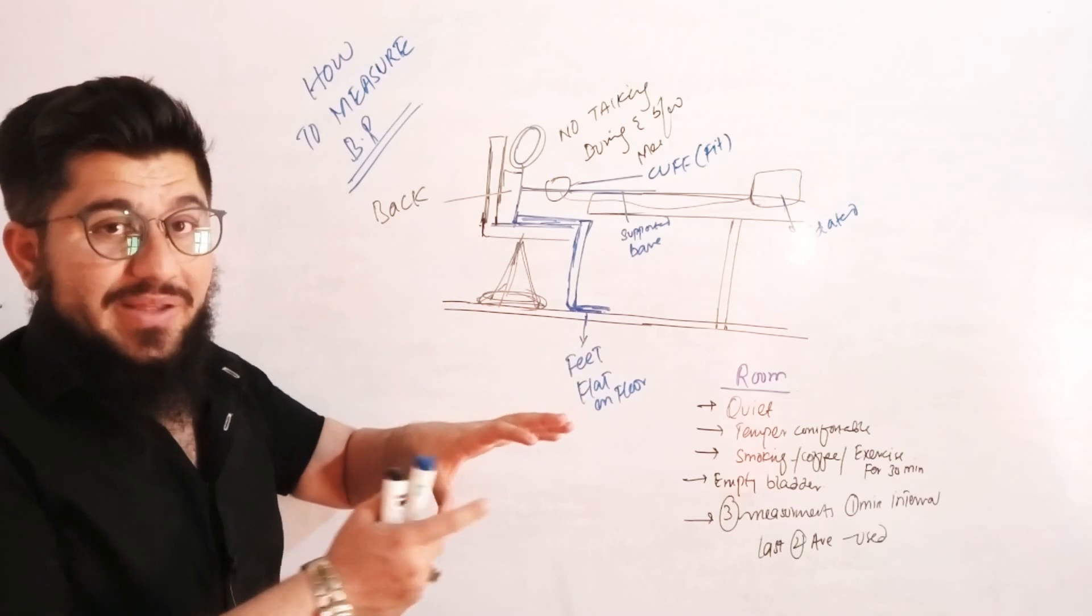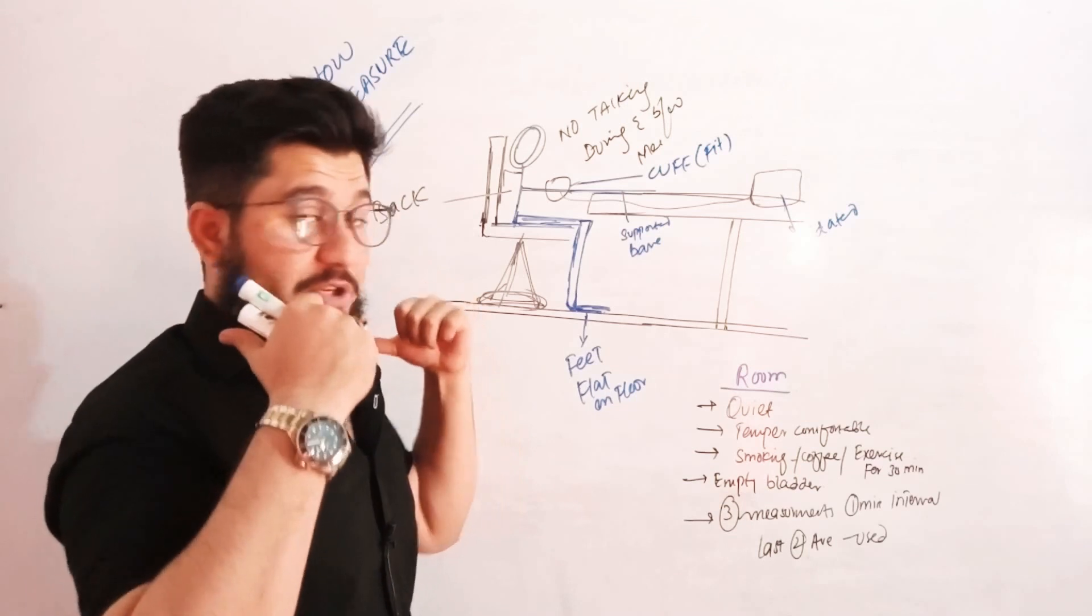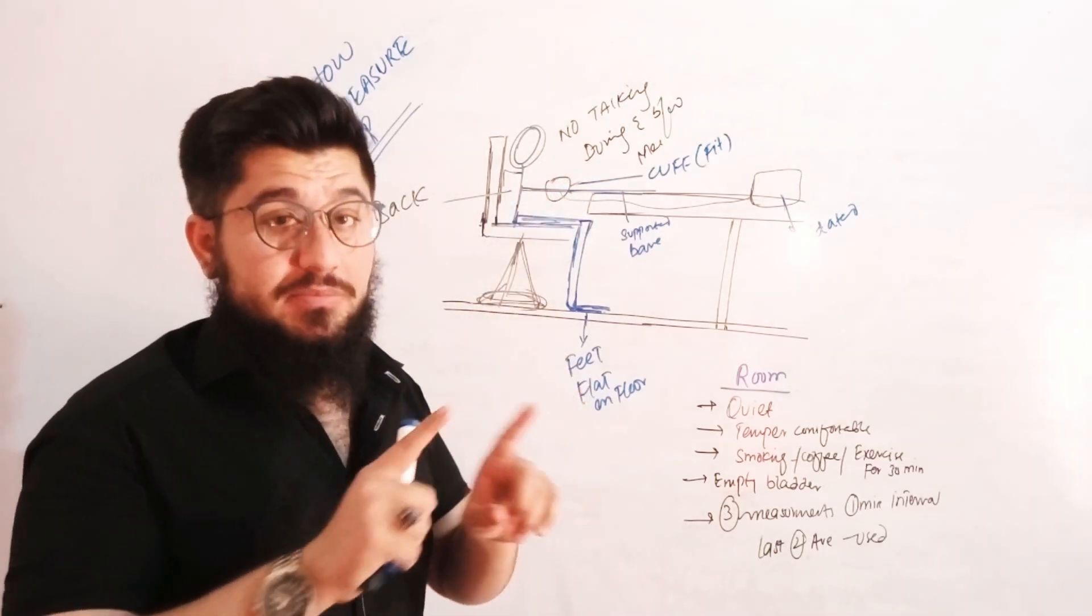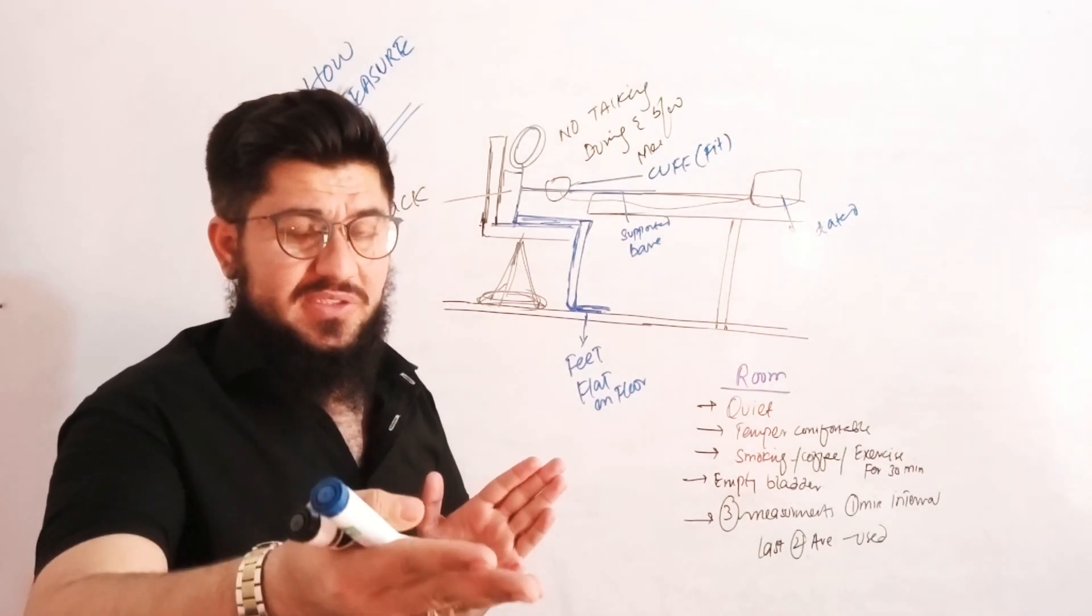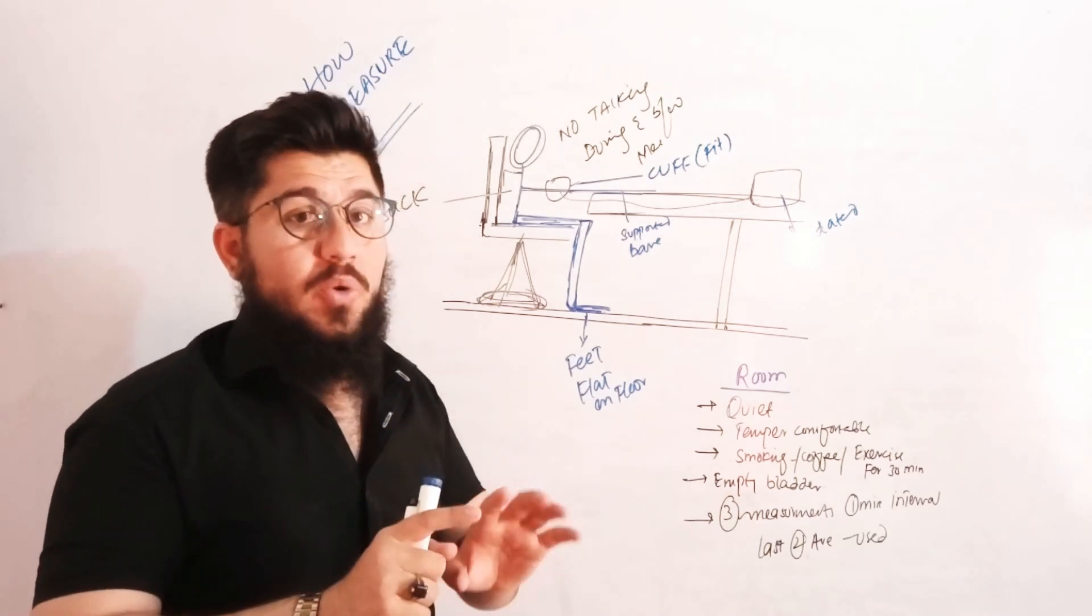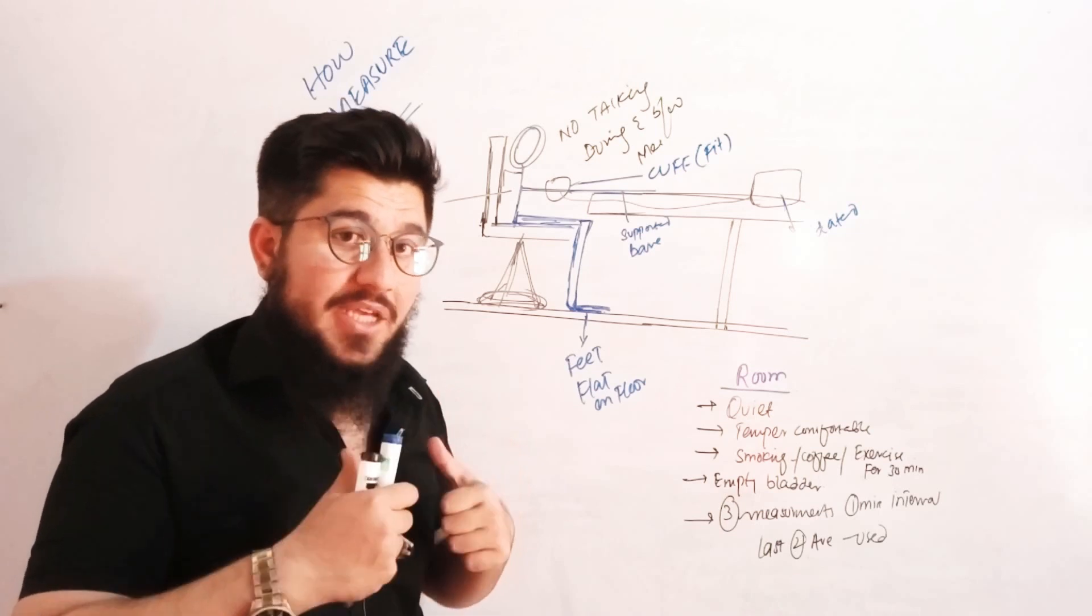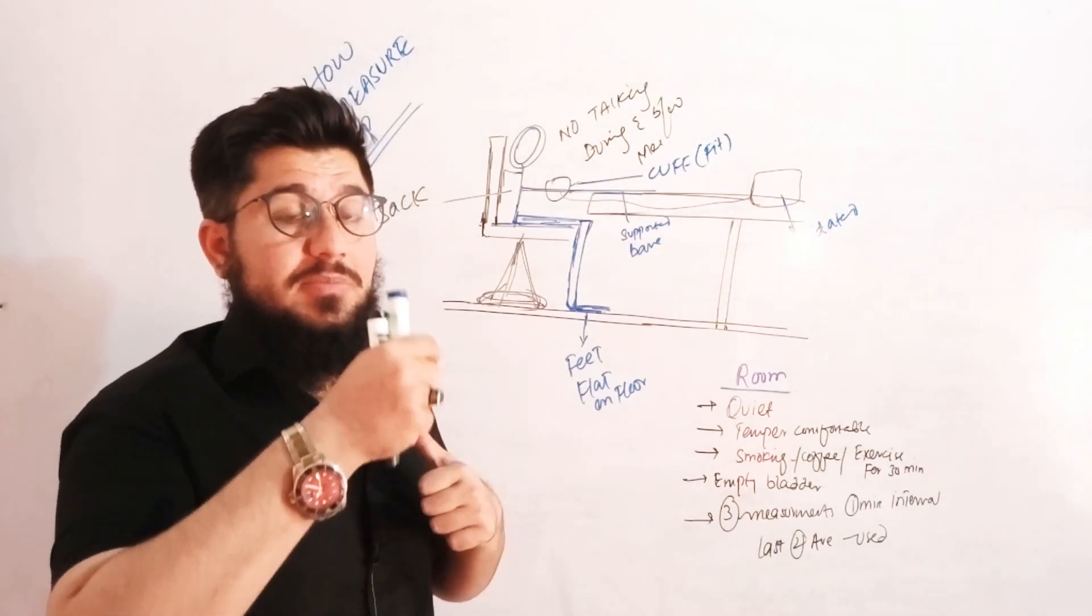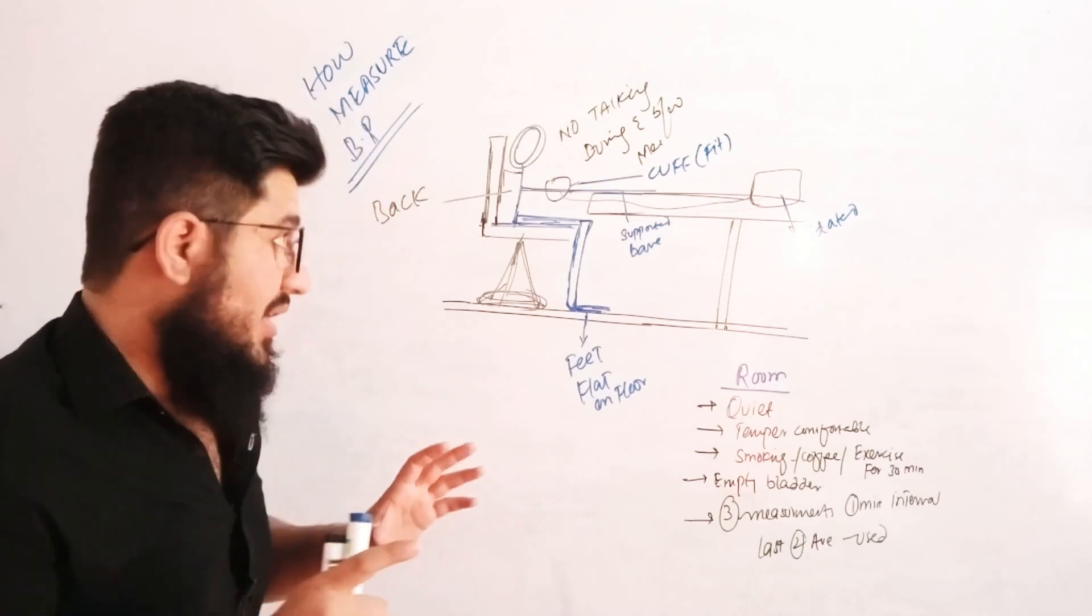The back must be supported, and there must not be any crosstalk between the patient and the physician whatsoever. The professional measuring the blood pressure should do so in a very quiet manner. There must not be noise at all.